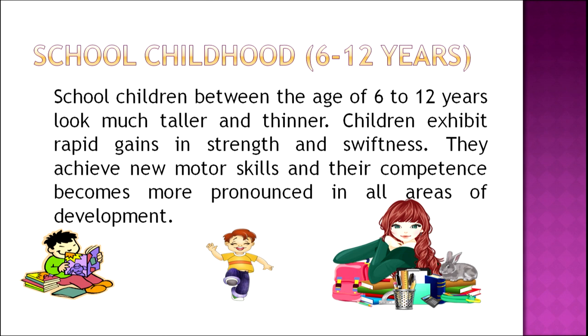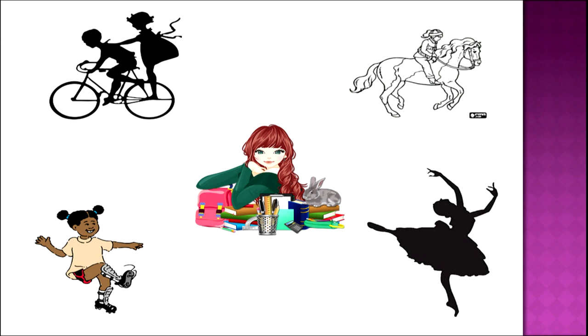Children achieve new motor skills and their competence becomes more pronounced in all areas of development, like reading skills, eye-hand coordination, and motor skills. The next and very important stage is adolescence, ranging from twelve to twenty years — the span of years between childhood and adulthood, which begins at puberty. This is the period of rapid physiological and psychological changes. Children jump rope, bicycle, ride horses, dance, and indulge in all possible games. Cognitively, they are more agile, and social relationships become more important. The hallmark of this stage is the search for identity — who am I, and what am I supposed to do?